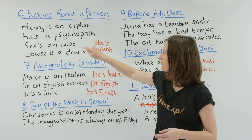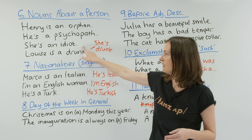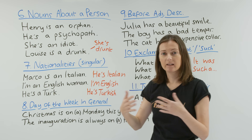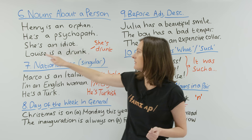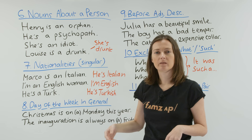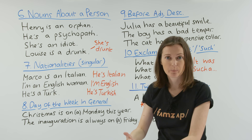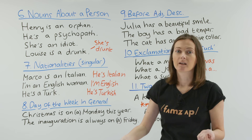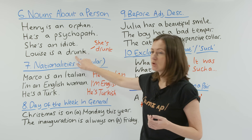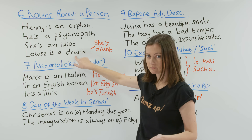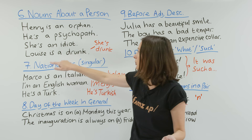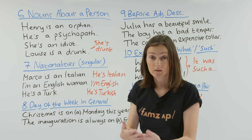Another example: 'She's an idiot.' If we change 'idiot' to the adjective form 'idiotic', we don't need 'an' — we can say 'she's idiotic'. But because we're using the noun, we say 'she's an idiot'. And the last example: 'Louise is a drunk' — when we say someone is a drunk, 'drunk' is a noun, meaning they drink every day, perhaps having alcohol first thing in the morning. This is very different from saying 'Louise is drunk', which just means she's drunk right now, not all the time.